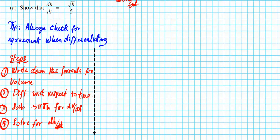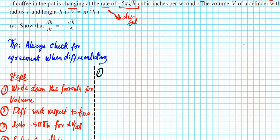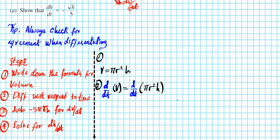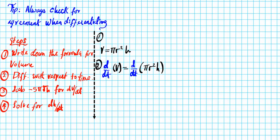Let's get started. Step one: the volume formula is v = πr²h. Now we're going to differentiate with respect to time. So we're differentiating the left side: d/dt of v equals d/dt of πr²h. Now, what you're differentiating with respect to is t, and the variable on the left side is v. So we have a disagreement there, which means you differentiate that variable and then add d of that variable over dt — the variable we're differentiating with respect to.